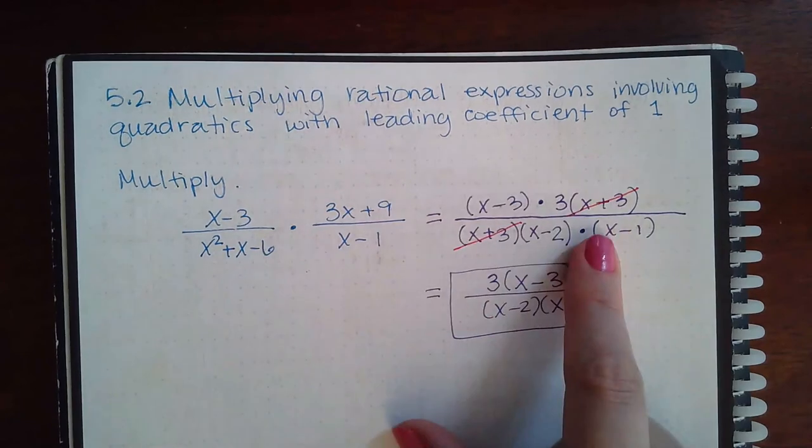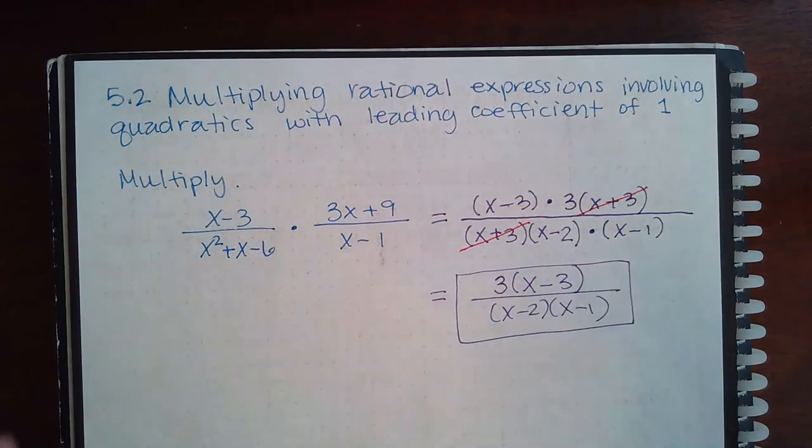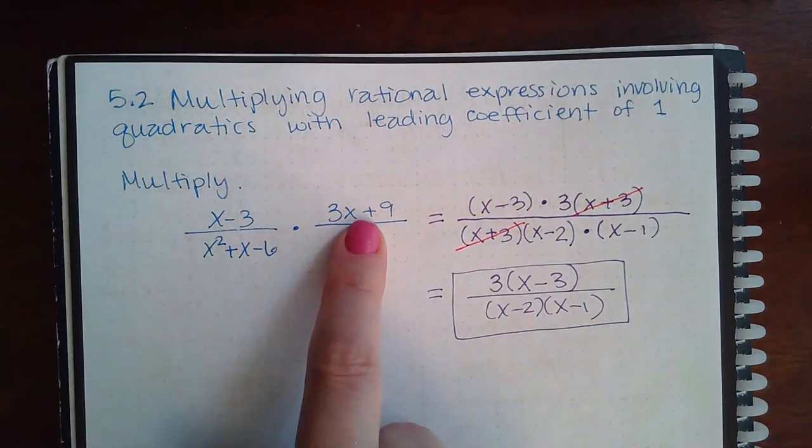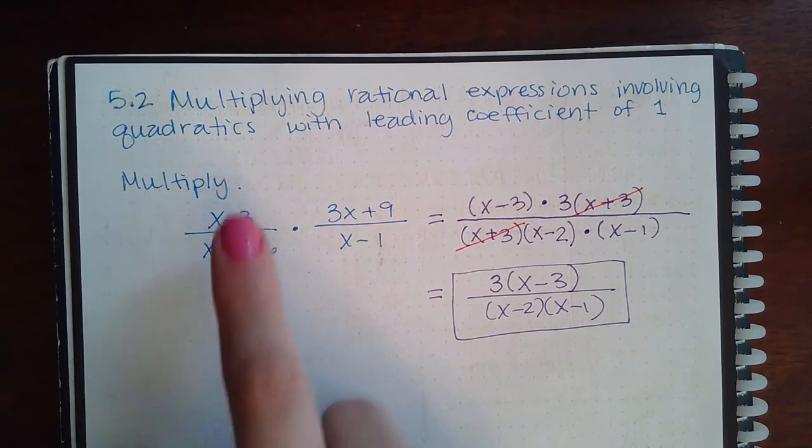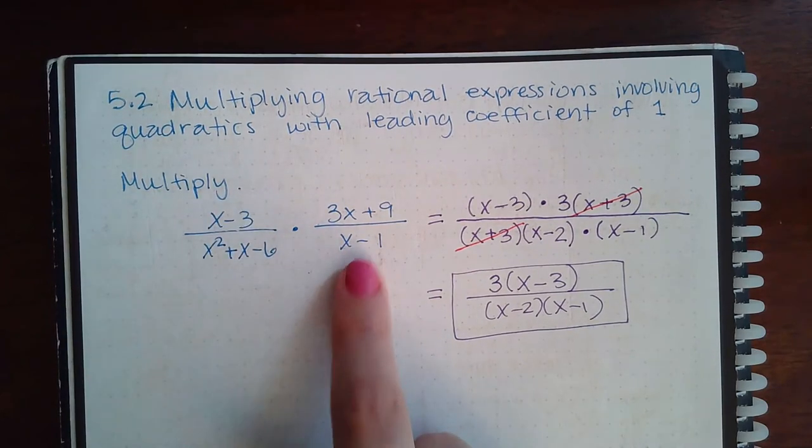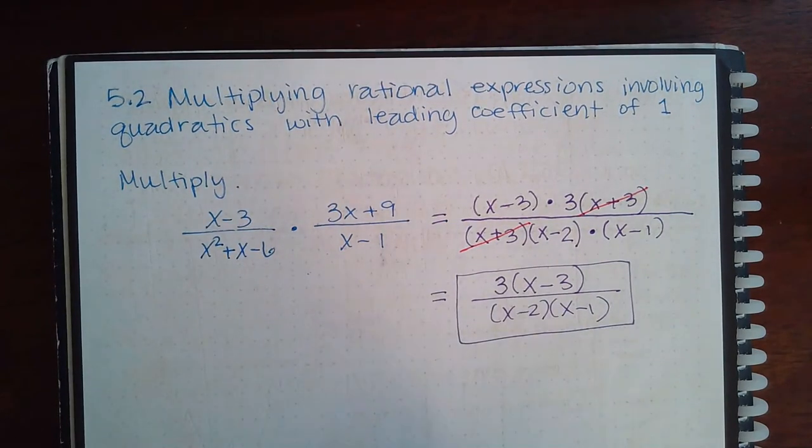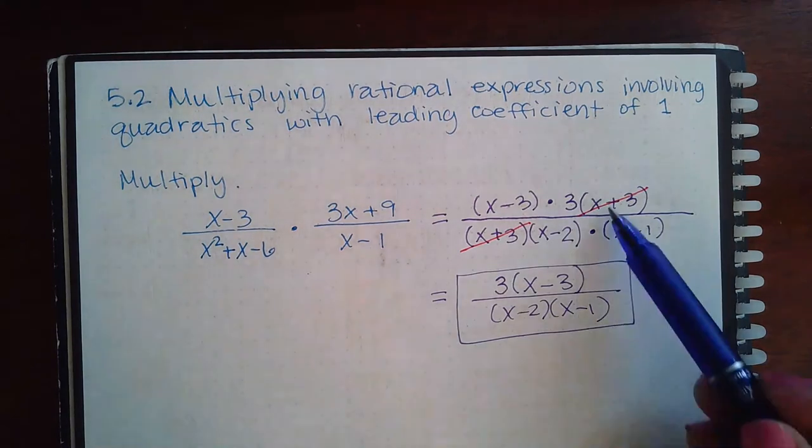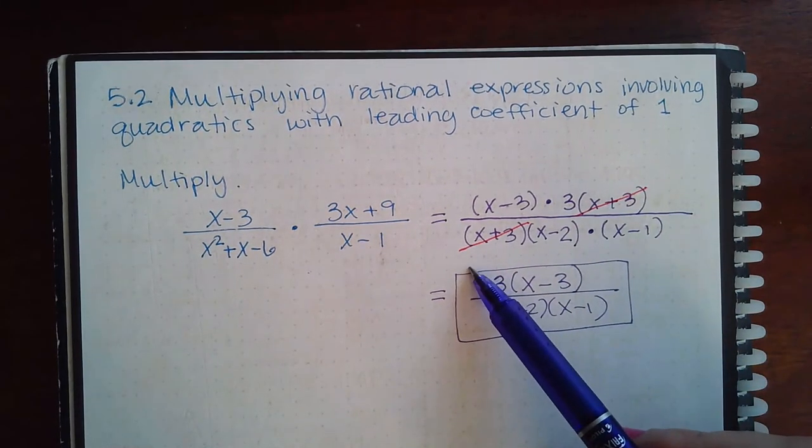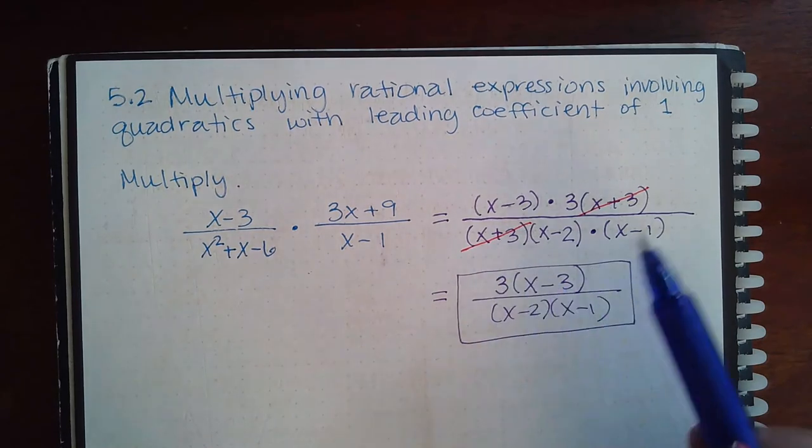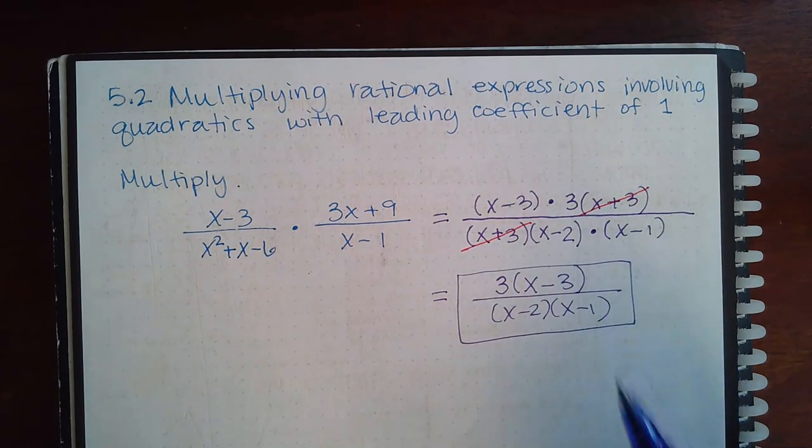And once they're factored, what they have in common may be different. It may not necessarily have been a factor from here and a factor from there. Could have been one from here, one from there. The key point is that it has to be one top factor that reduces with one bottom factor. That's the main idea. One top factor with one bottom factor.